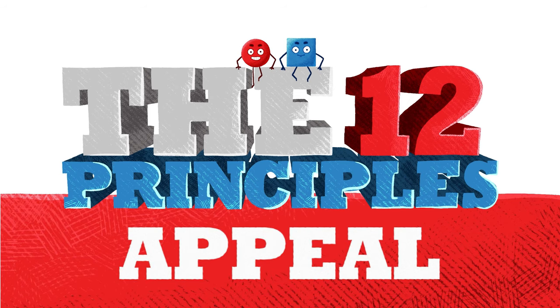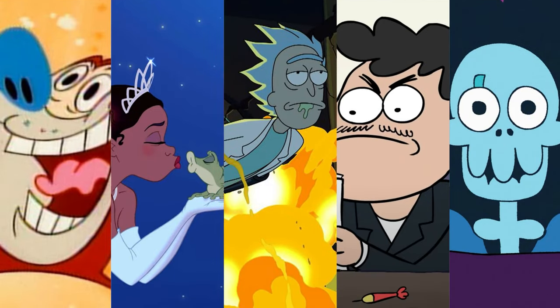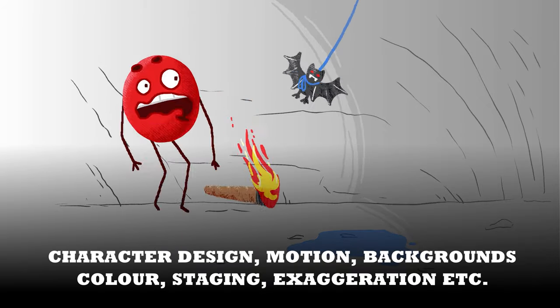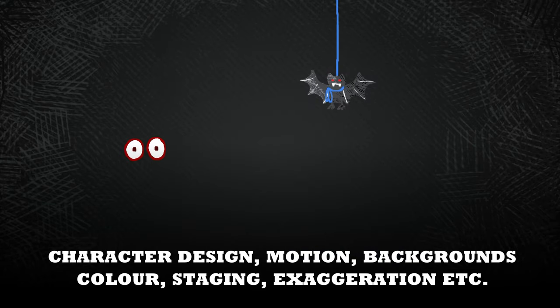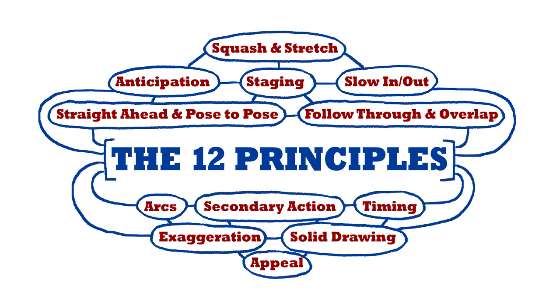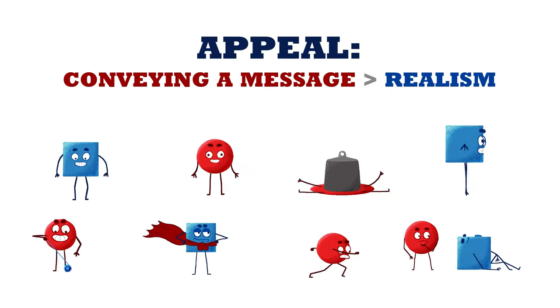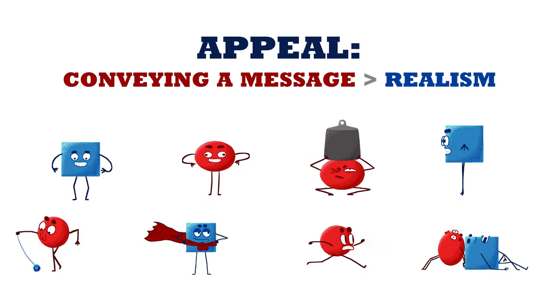That's it for solid drawing, next up is appeal. Appeal in animation is all about being dynamic. It doesn't necessarily mean nice to look at because that's subjective, but instead you can replace the word appealing with engaging. Everything your animation is doing, from character design through to exaggeration, should be working to make your animation as engaging or appealing as possible. With this in mind, you can kind of think of appeal as the culmination and combination of all the other principles of animation plus a little something extra on top. Whilst the other principles are about making believable animation, appeal is about focusing on what we're trying to convey and doing that in the best possible way.